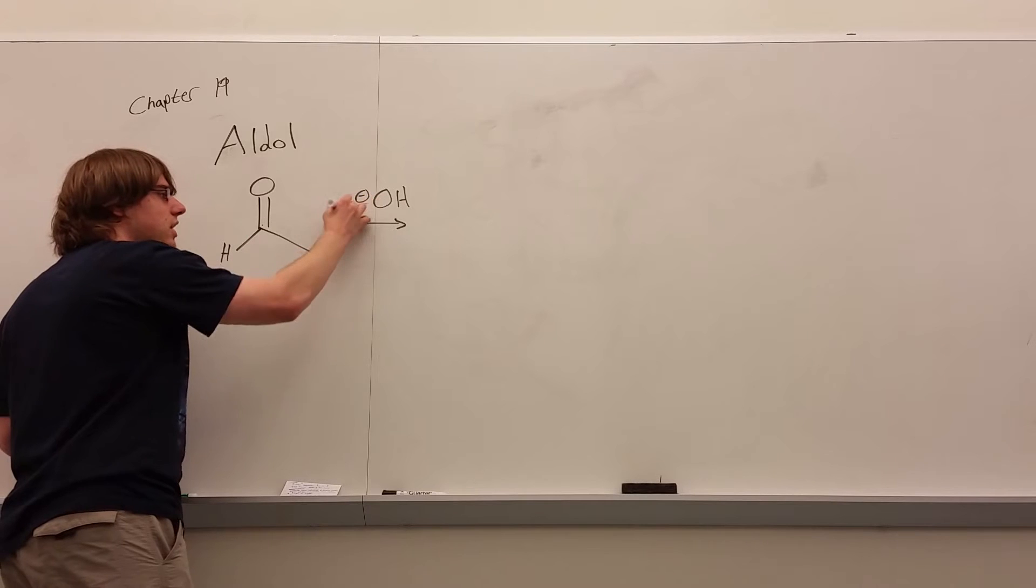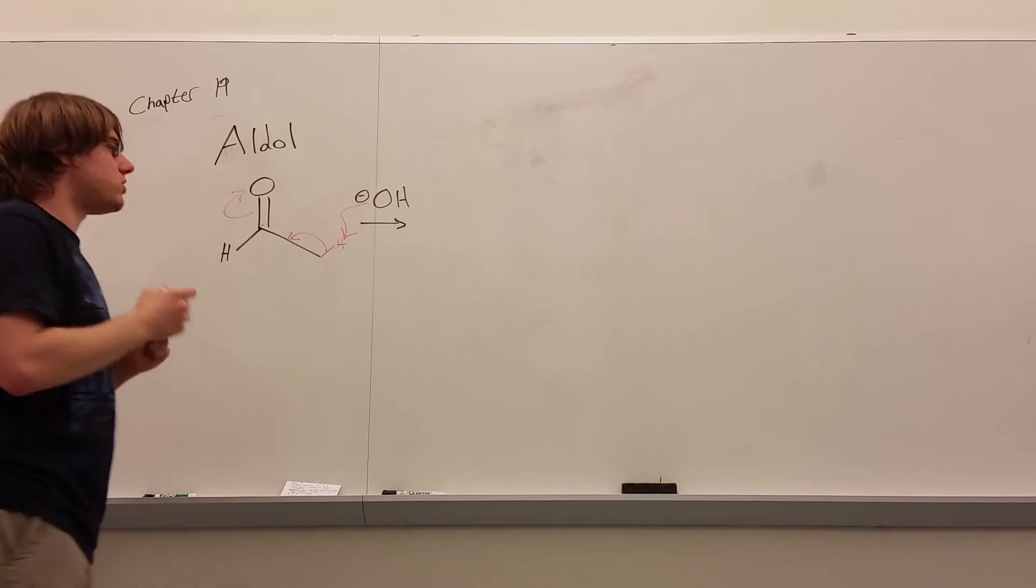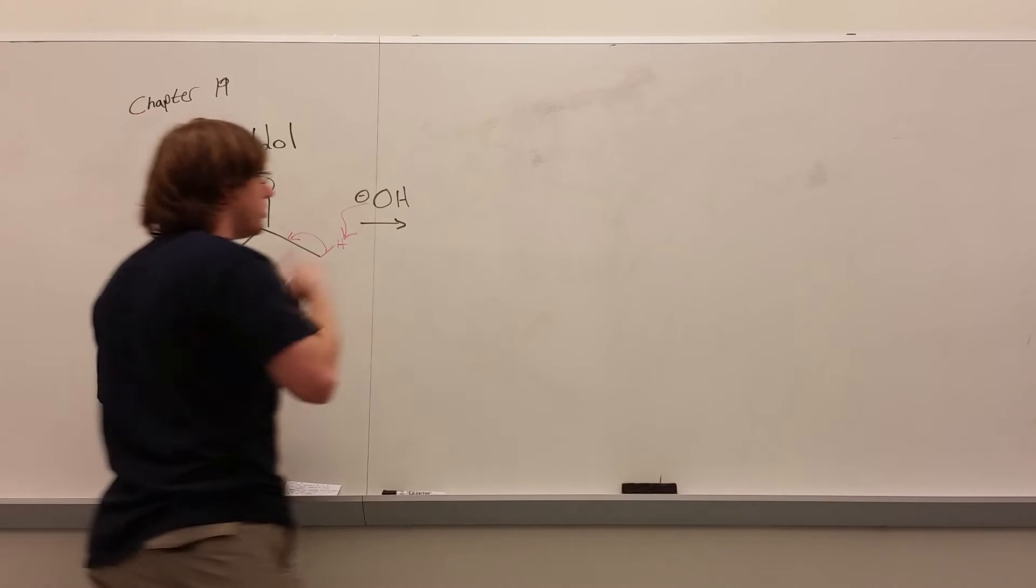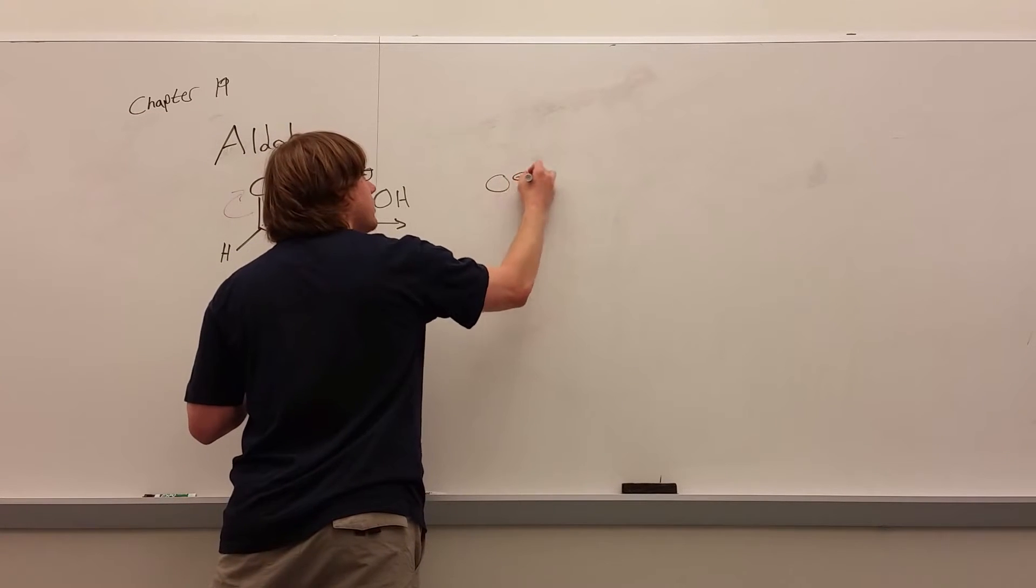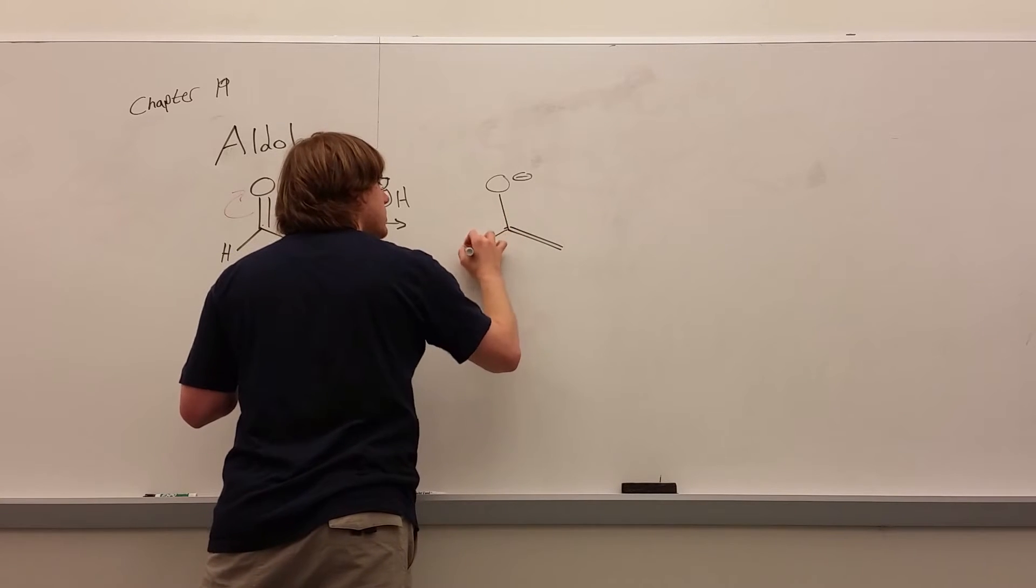It's only going to make the enolate as a new intermediate. And so it'll pull off that hydrogen, and you'll form your enolate, O-. And then I have a hydrogens.